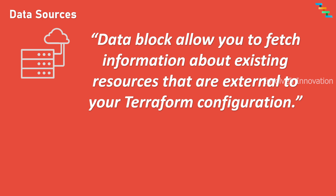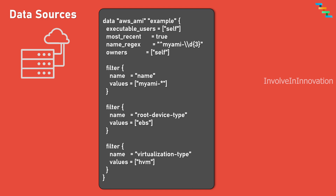Next we will see about the data sources block. The data block allows you to fetch information about existing resources that are external to your Terraform configuration. They provide a way to query and import data from APIs, existing infrastructure, or other external resources into your Terraform state. For example, you can use a data source to fetch the ID of a registered AMI to use in other resources. 'data aws_ami' is used to get AMI information for an existing EC2 instance, with filters and the most_recent attribute set to true to return the most recently created AMI.